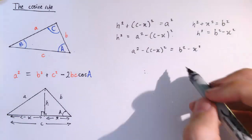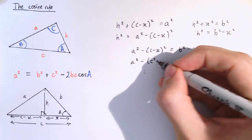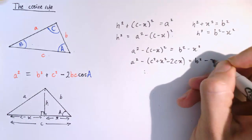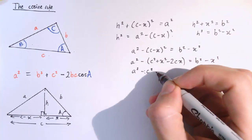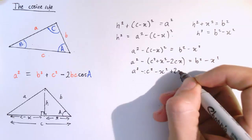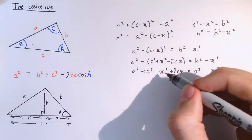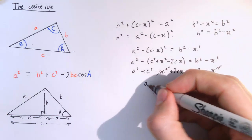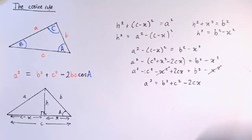So let's see what happens when we multiply this out. So we get a squared minus c squared plus x squared minus 2cx equals b squared minus x squared. I'm being really careful with this minus outside the brackets here. So I get a squared minus c squared minus x squared plus 2cx equals b squared minus x squared. And that means that I've got minus x squared on both sides here that cancel. And putting everything over to the right hand side gives us a squared equals b squared plus c squared minus 2cx.